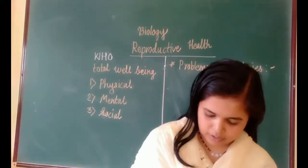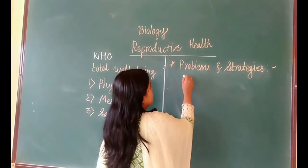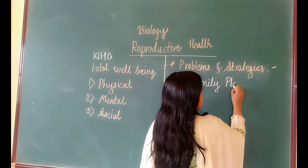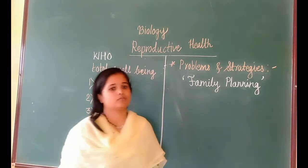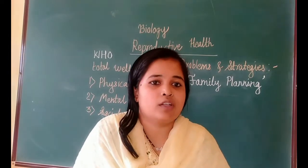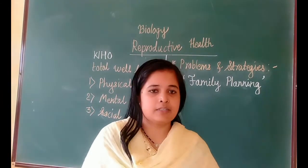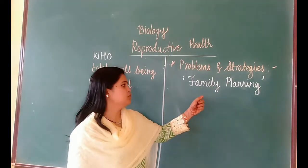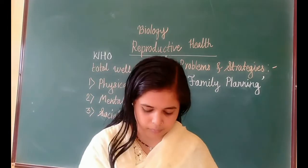India was among the first countries in the world to initiate action plans. India started the family planning program to reduce the size of the family. This program has become very famous. Before this program, there were many children in families — commonly 9 to 10 kids, or even more. So India initiated the family planning program to reduce the number of kids, so that all children get proper resources.